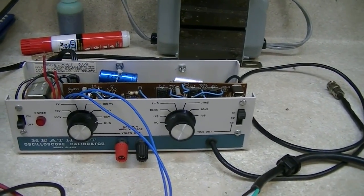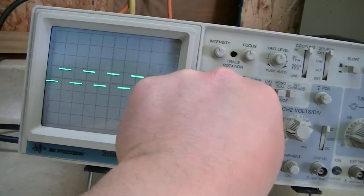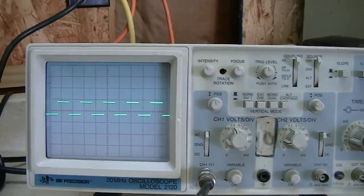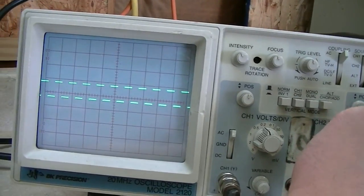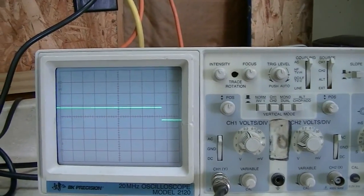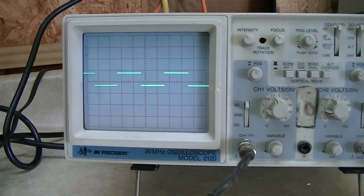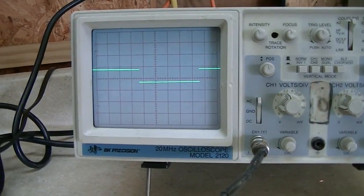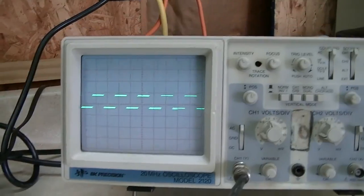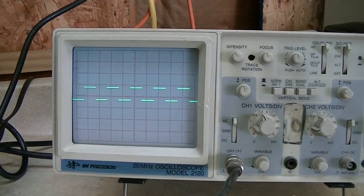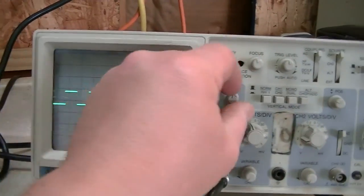Well I pulled out one of my oscilloscopes and as you can see this unit works exactly as it should now. So basically I'll just swap that transformer over and have myself a really nice visually and good functioning oscilloscope calibrator.